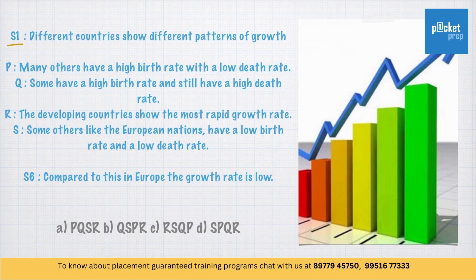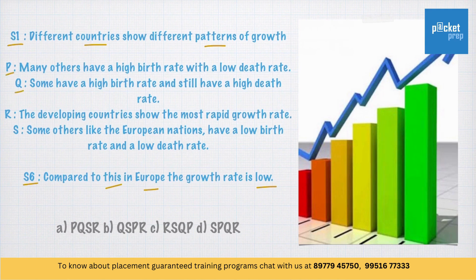Here is the first statement: 'Different countries show different patterns of growth.' And the last statement says: 'Compared to this in Europe, the growth rate is low.' If you observe the jumbled sentences P, Q, R, S — Q has 'some,' S has 'some others,' and P has 'many others.'